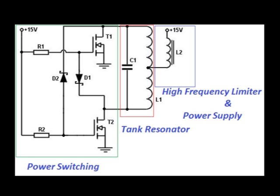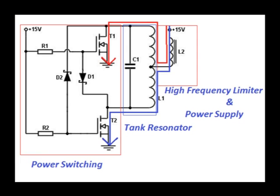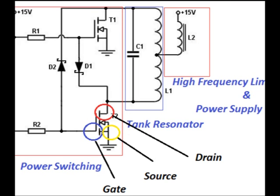The power switching subsystem controls the flow from the power supply to the tank resonator circuit by alternating the path to ground. This is done by activating and deactivating two power MOSFET switches. The activation of the MOSFET requires a potential across the transistor's gate. This creates a conduction path between its drain and source.